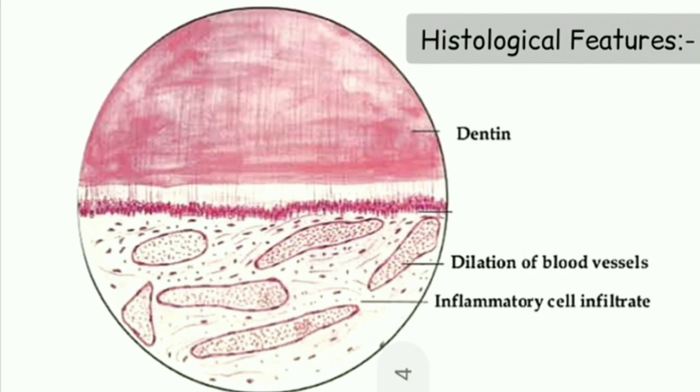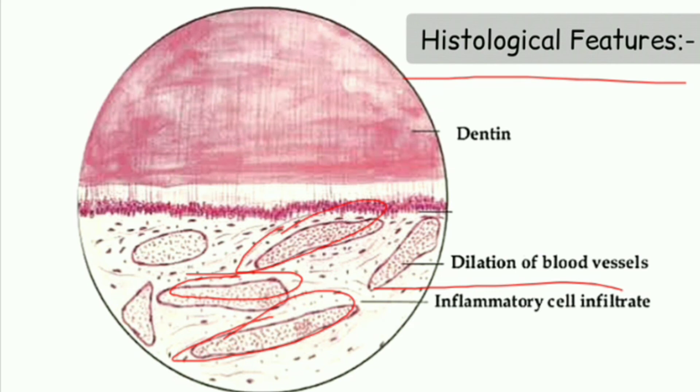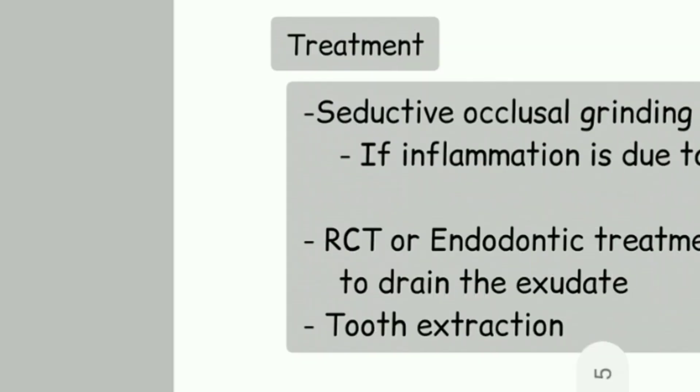Moving forward to histological features. When we talk about histological features, we will see dilation of blood vessels as you can see here. There will also be inflammatory infiltrates - all the things present in between are the inflammatory infiltrates. This is our usual dentin. This is the typical picture of histological features of acute apical periodontitis.